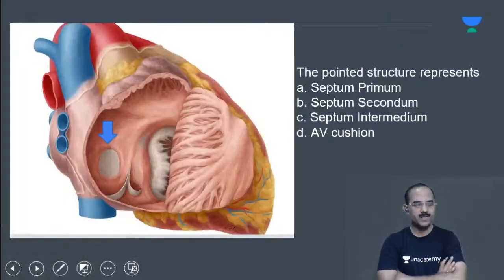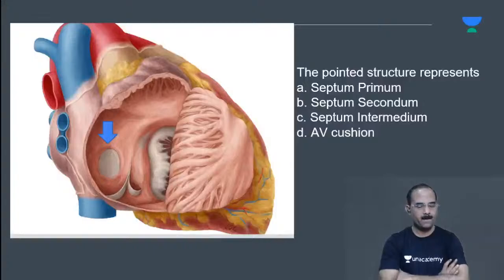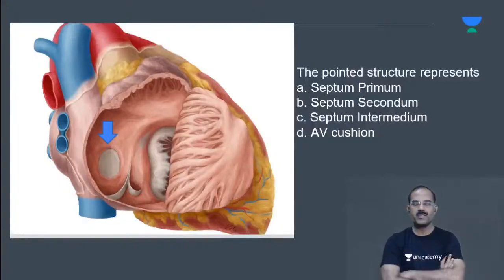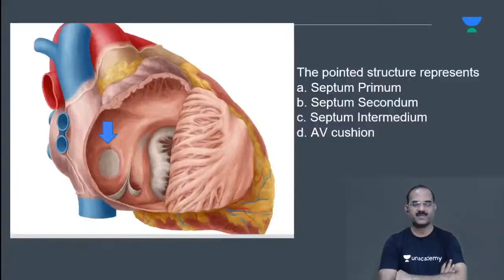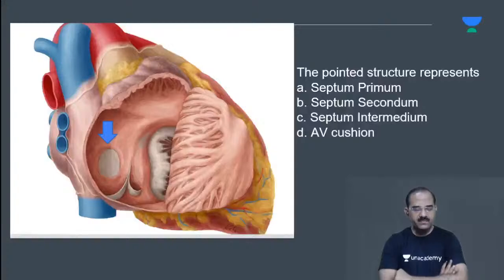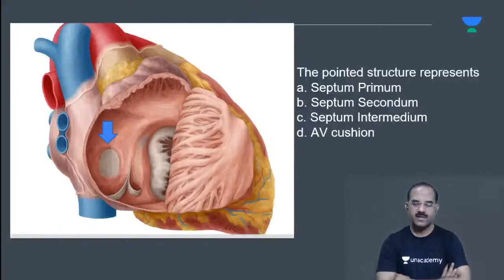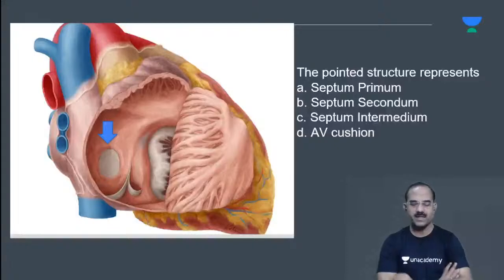Here we are — answer this. The pointed structure represents... Septum secundum. Very good, that's septum secundum. Excellent.